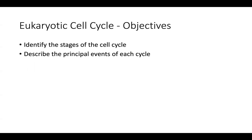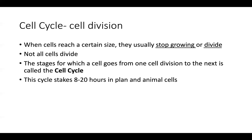We're going to look at the eukaryotic cell cycle. Two things to walk away with today: being able to identify the stages of the cell cycle, and describing what's happening at each event. Our cells don't have an infinite lifespan — they either divide into a new cell or they die. When cells reach a certain size or age, they usually either stop growing or divide. The stages for which a cell goes from one cell division to the next is called a cell cycle.